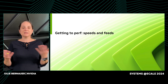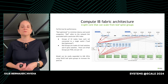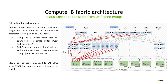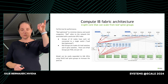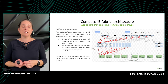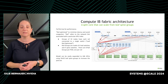Let's deep dive into the compute InfiniBand fabric — a pretty complex but performance-optimized architecture with a split core built from leaf-spine groups. At the bottom, green boxes each correspond to a server with GPUs. GPU one from machine one connects to leaf switch one; GPU one from machine two also connects to leaf switch one — all GPU ones talk to each other through the same switch. This design is optimized for AI collective operations like all-reduce. The base model uses 4×4 leaf-spine groups of 32 nodes, with eight rows per pod, and this model scales to 4,000 GPUs. Using 32×32 leaf-spine groups, you can scale all the way to 64,000 GPUs.